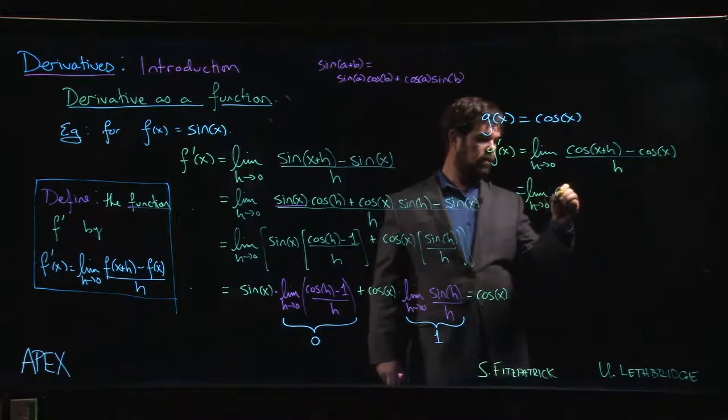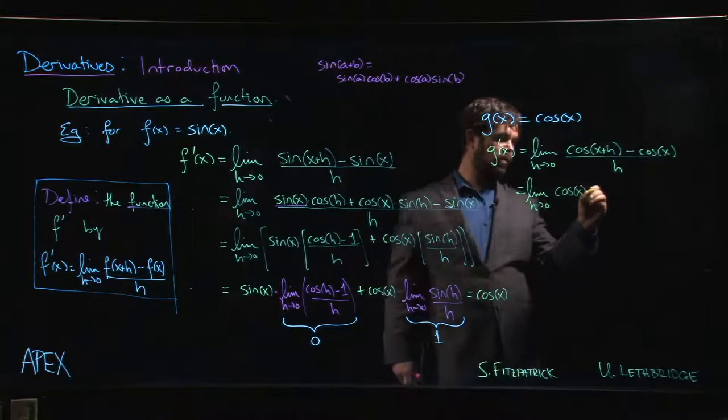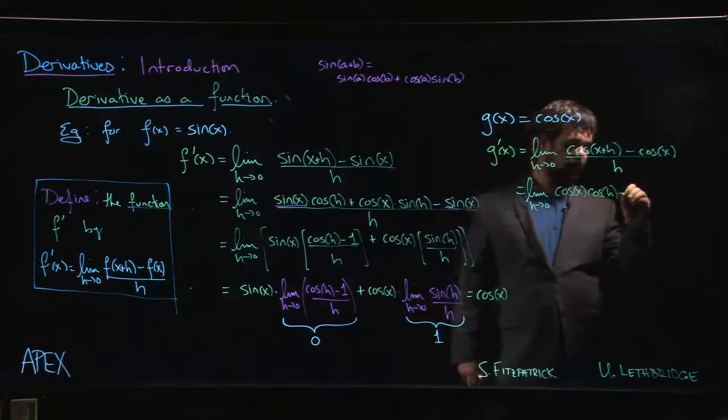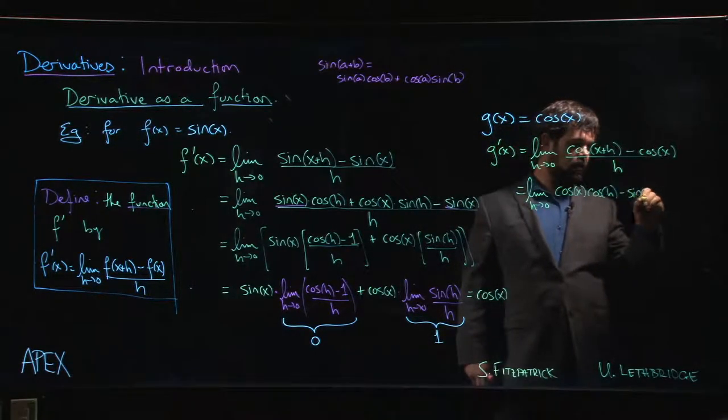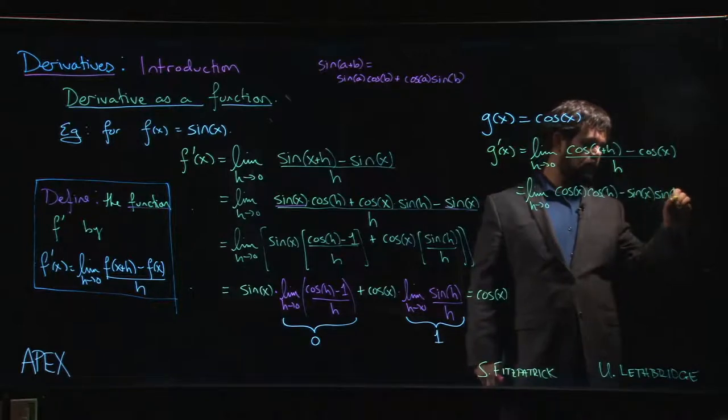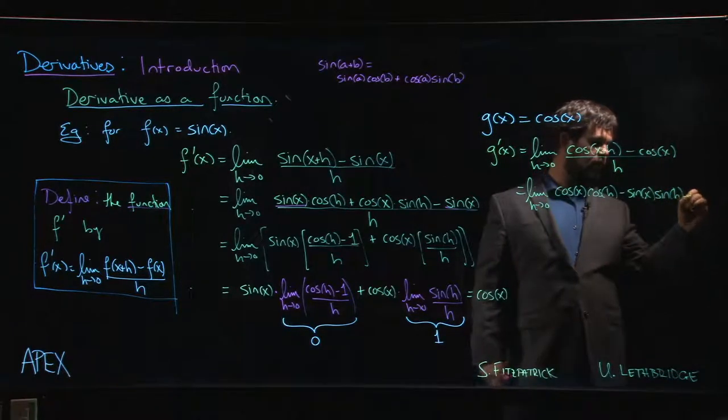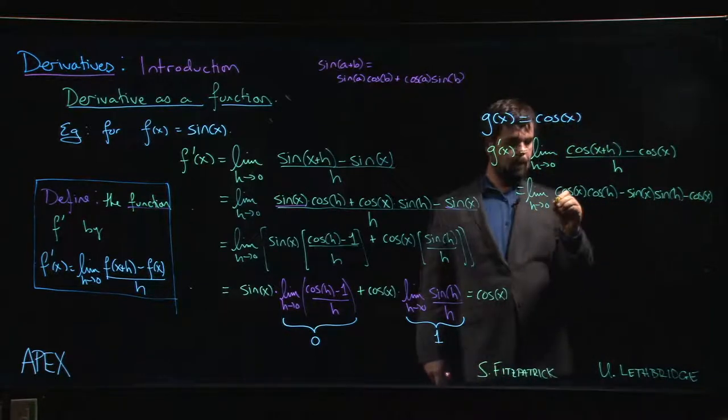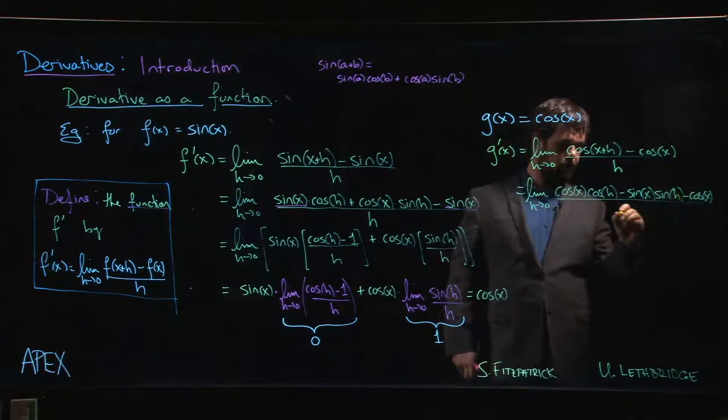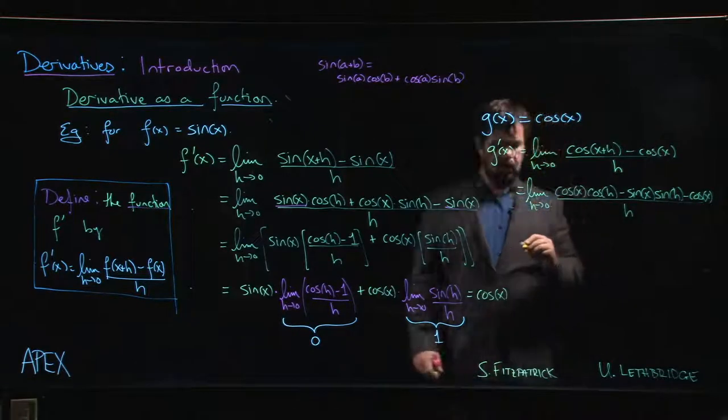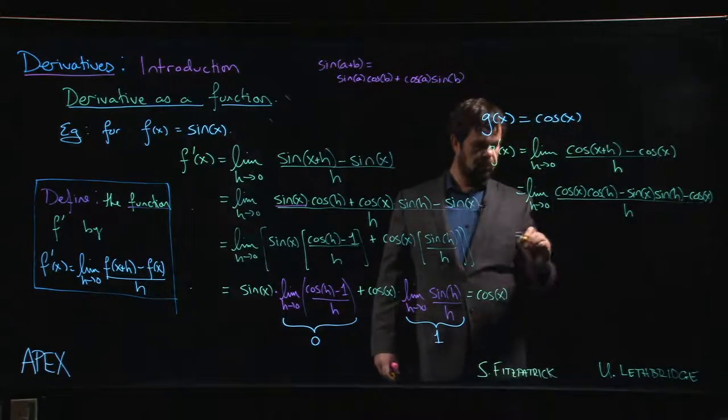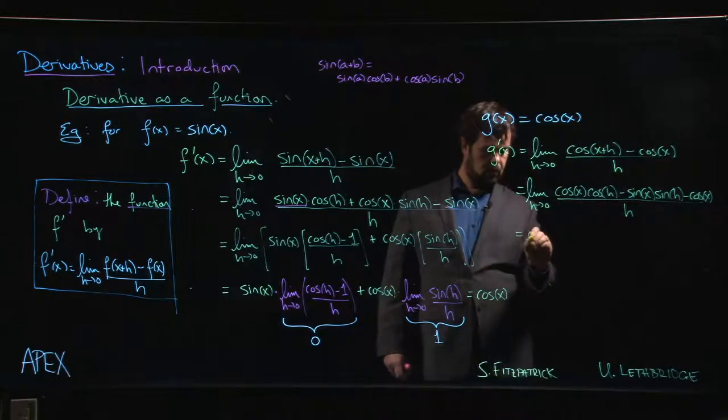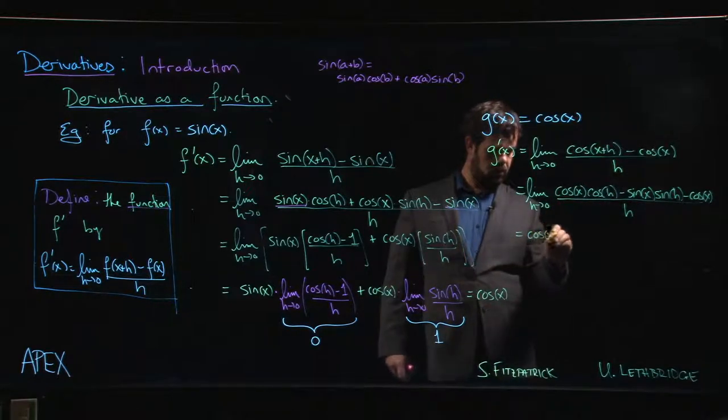It's cos(x)cos(h) - sin(x)sin(h) minus this remaining cos(x), all over h. So once again we group terms. I'll speed things up a little bit this time, so there's going to be a cos(x) term and there's going to be a sin(x) term.